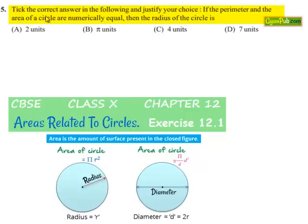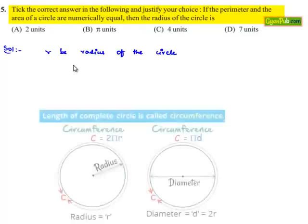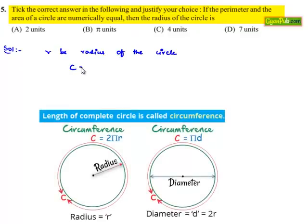Coming to the fifth question: tick the correct answer and justify your choice. If the perimeter and the area of the circle are numerically equal, then find the radius of the circle. Moving on to the solution: let r be the radius of the circle. Then the circumference C = 2πr.